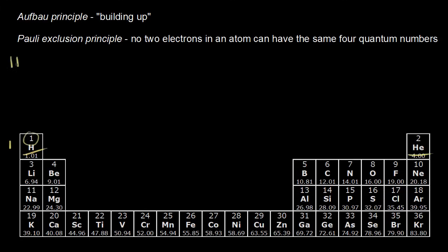If the atomic number is one, that means there's one proton for hydrogen. In a neutral atom, the number of protons is equal to the number of electrons. So if there's one proton, there must be one electron. Our goal is to write an electron configuration for that one electron of hydrogen.